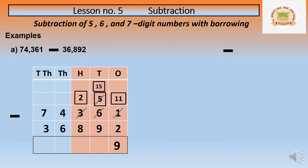According to the concept of subtraction, the tens place now shows 15, which is exactly 150 because we borrowed 100 from the hundreds place. 150 minus 90 could be confusing in the chart, so I remove the zeros and work with 15 minus 9, which equals 6. The answer so far is 6 6 9.